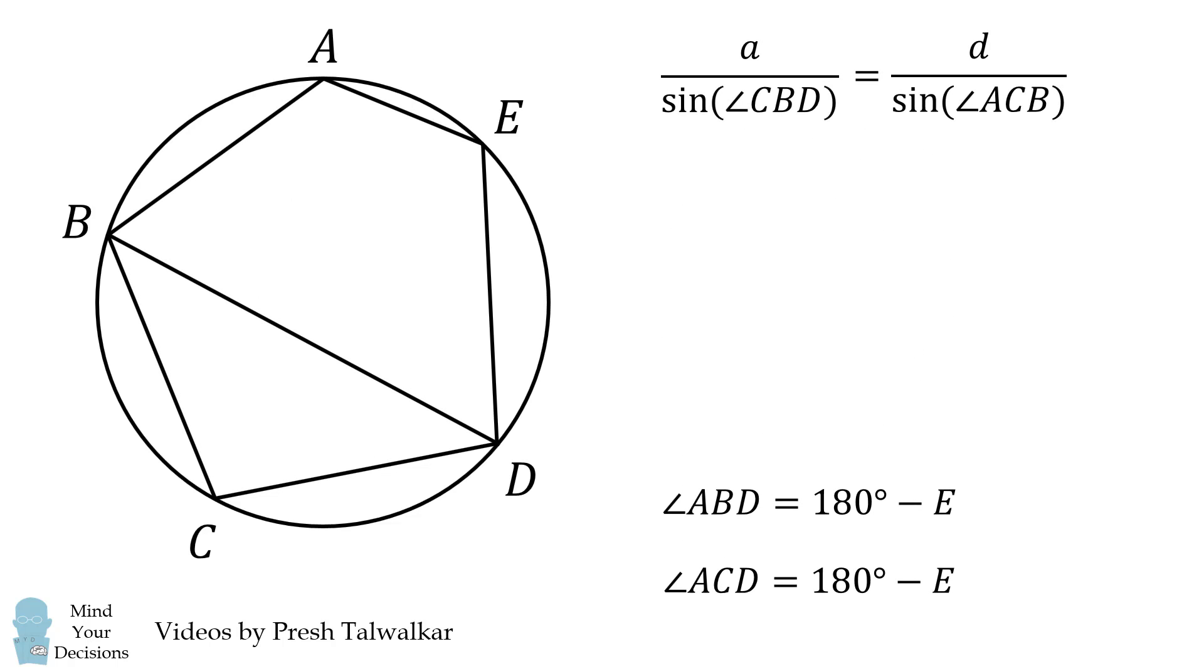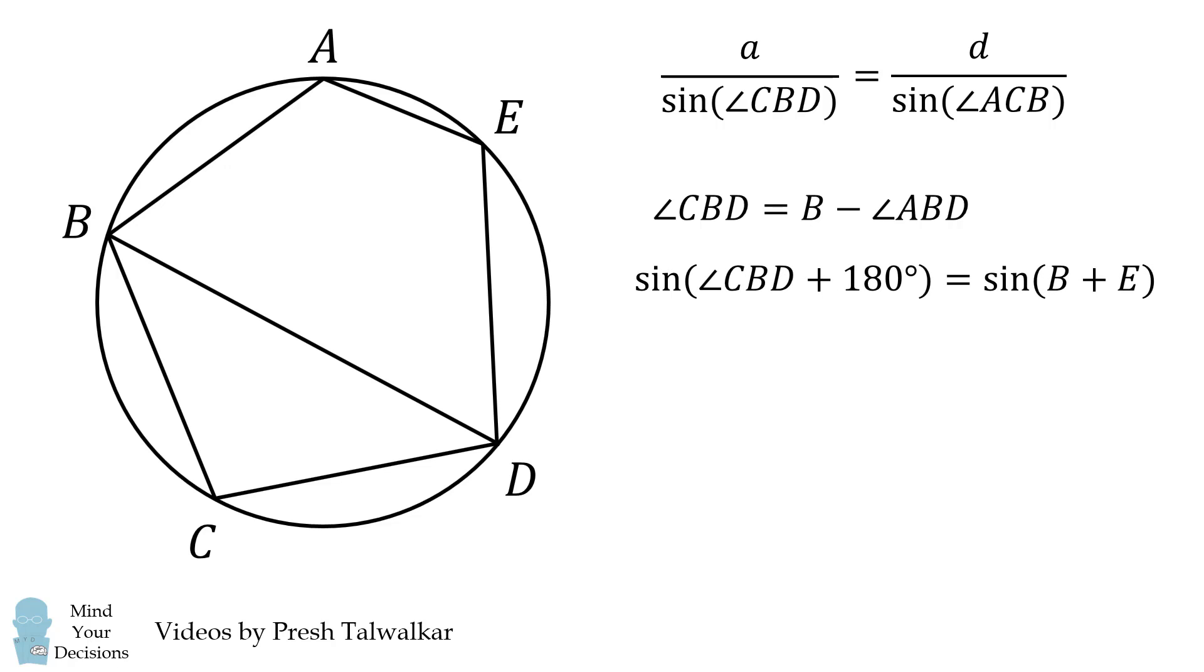So how does this help us derive what we need to get? Well, angle CBD is equal to B minus angle ABD. We substitute in what we derived, and then we simplify this equation. We then take the sine of both sides. Use the sum of angles identity to get the sine of theta plus 180 degrees will be negative sine of theta.